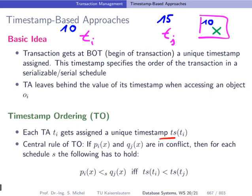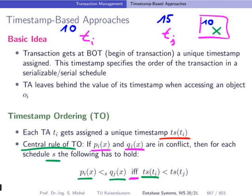More formally, we call this the central rule of timestamp ordering. If P and Q are conflicting operations — for instance, read-write — and P comes from transaction I while Q comes from transaction J, then for every schedule S it must hold that if P comes before Q in S, then the timestamp of transaction I must be strictly smaller than the timestamp of transaction J, and vice versa. So here we have an if and only if.